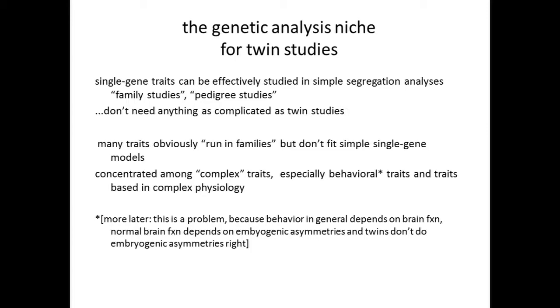This is a problem that comes up in what I've called the second century of twin studies, beginning about 1975, when I just started not believing what I'd been taught. Behavior—pretty much everything you do in the way of behavior—depends upon differential function of the two halves of your brain. Brain function asymmetry, handedness, motor performance: asymmetry of motor performance in your hands depends on difference in the way the brain functions on the left and right side. The same with most emotional, intelligent, and psychological stuff. Pretty much everything your brain does depends upon these asymmetries established during embryogenesis, and twins don't do embryogenic asymmetries right.